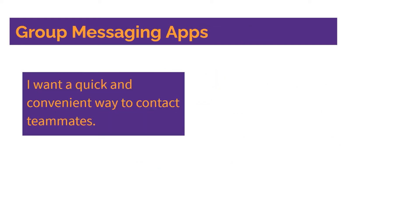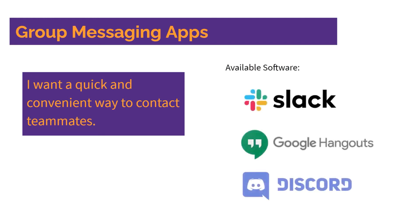Moving on to group messaging apps. You and your team are going to have to decide how you want to message each other. Our goal was to find a quick and convenient way to contact teammates. The apps we'll cover — Slack, Google Hangouts, and Discord — help you communicate through text instead of a full online meeting.